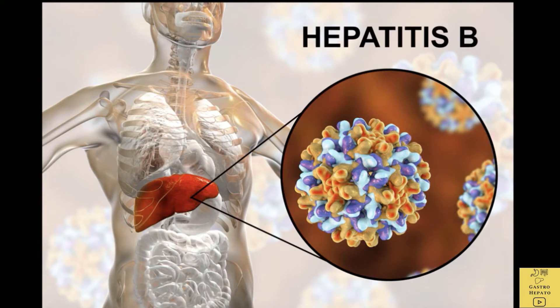There are an estimated 250 million people in the world who have chronic hepatitis B. The majority of these infections are in Asia and are due to mother-to-baby transmission at childbirth. There are serious complications of chronic hepatitis B including liver cirrhosis, liver failure, and liver cancer.